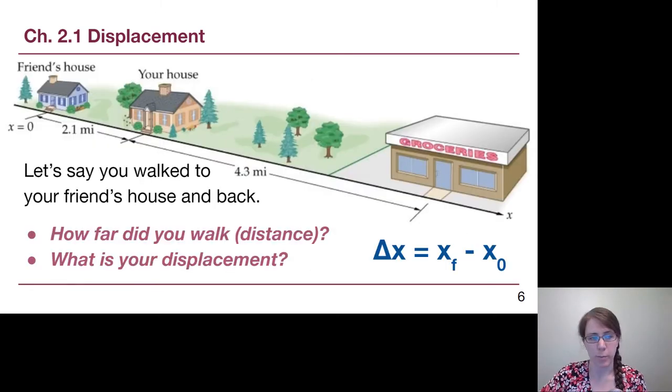We've got a picture from our book where our friend's house is at position 0. Your house is 2.1 miles away, so it's at position 2.1 miles. The grocery store from your house is an additional 4.3 miles, which means its address on this road would be 6.4 miles. I want you to think about this first question. Let's say you walked to your friend's house and back. I want you to think about how far you walked, the distance, like if you were wearing a step tracker, and what is your displacement based on our new physics understanding. Pause the video and write down your answers in your notes.